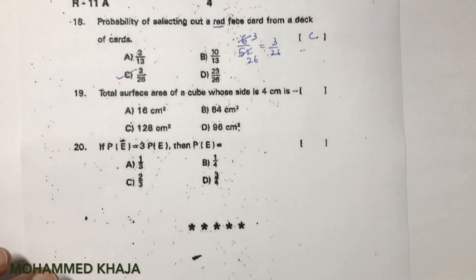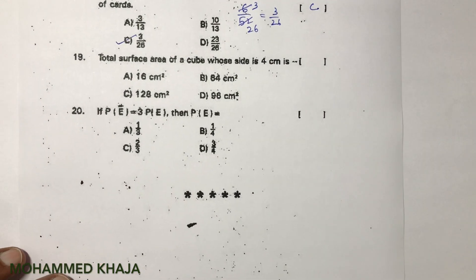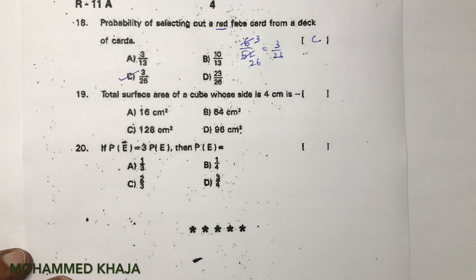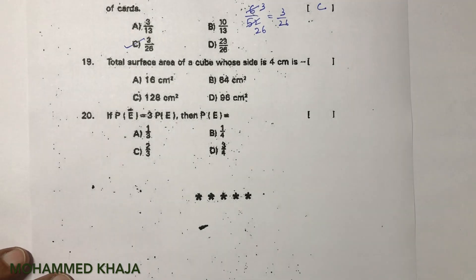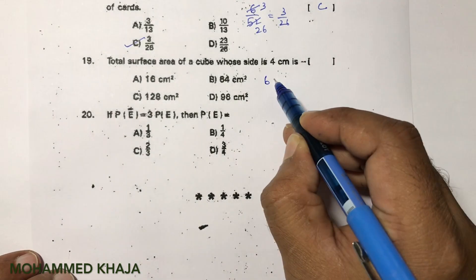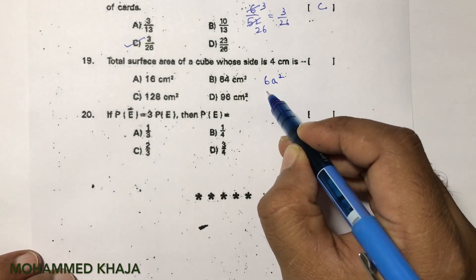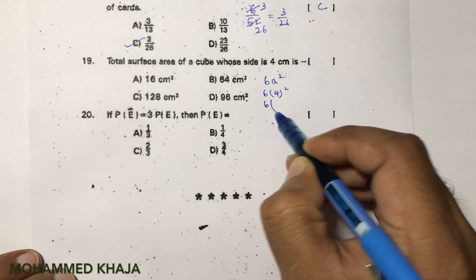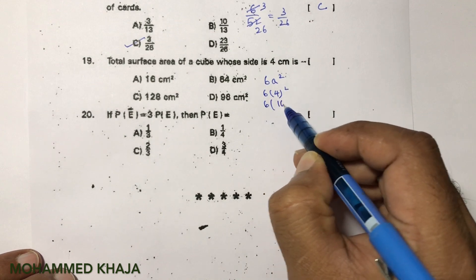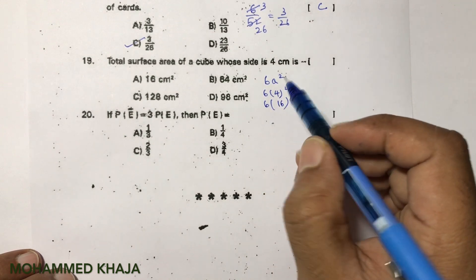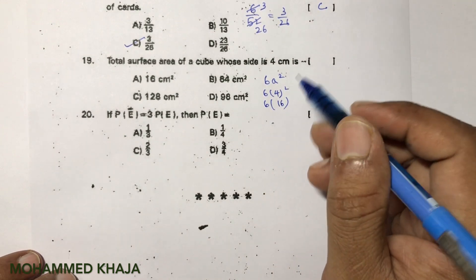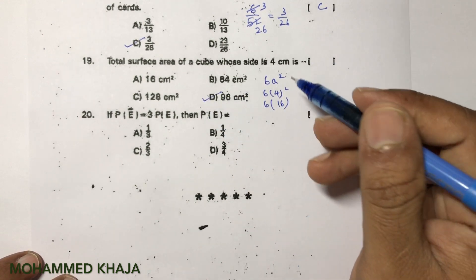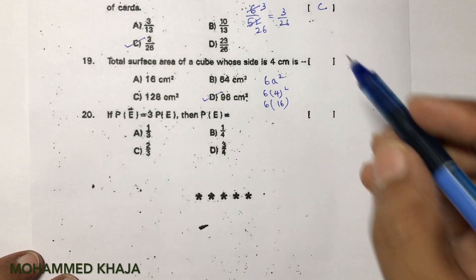Total surface area of a cube whose side is 4: TSA = 6a² = 6 × 4² = 6 × 16 = 96 cm². The correct option is D.